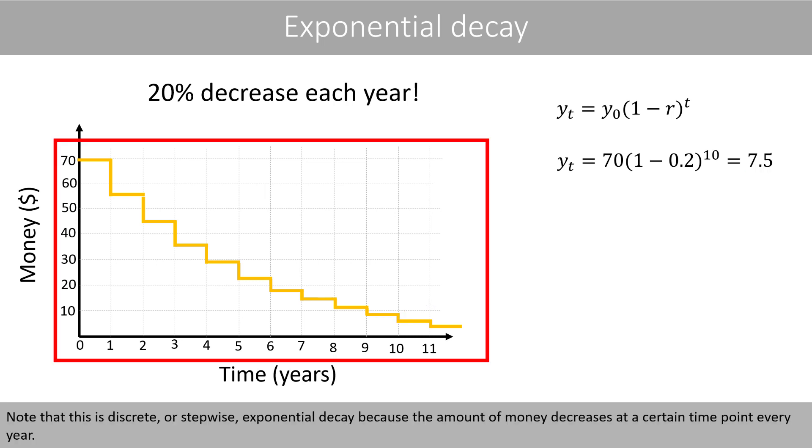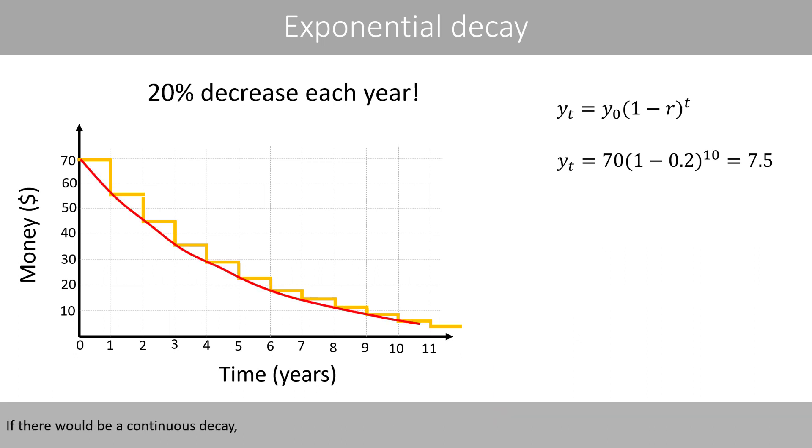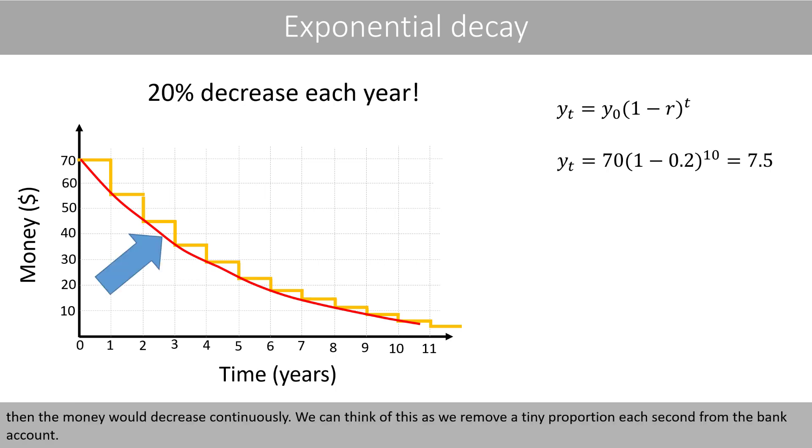Note that this is discrete or step-wise exponential decay, because the amount of money decreases at a certain time point every year. If there will be a continuous decay, then the money would decrease continuously. We can think of this as we remove a tiny proportion each second from the bank account.